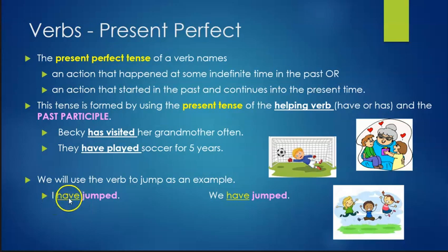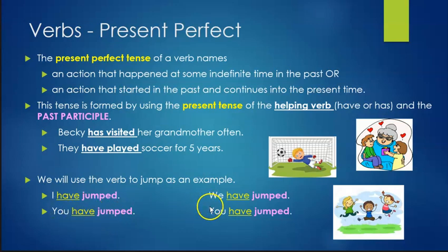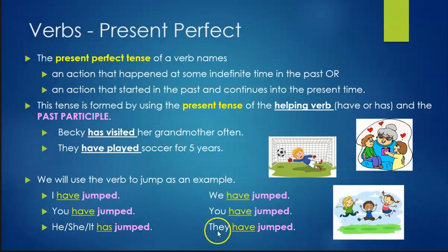Looking at conjugation: I have jumped — singular first person. We have jumped — plural first person. You have jumped — second person singular; you have jumped — plural. He, she, or it — third person singular — uses has: he has jumped. Then the plural: they have jumped. In all cases we're using the present tense form of the helping verb and the past participle of the verb.